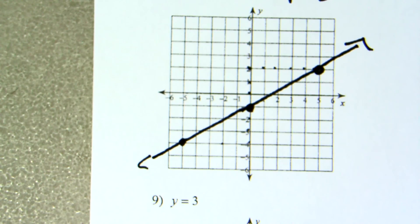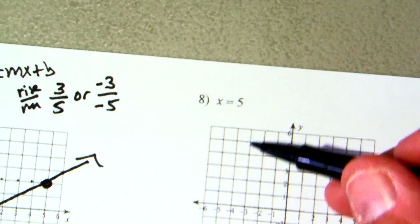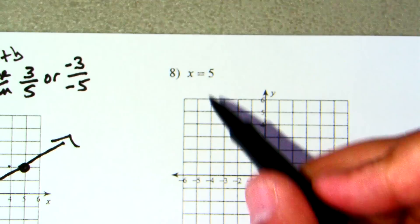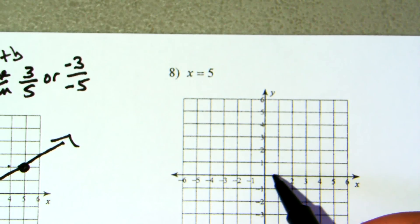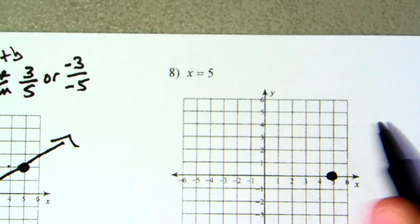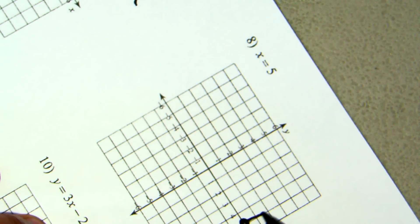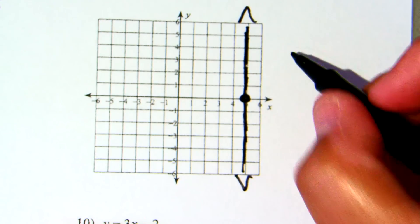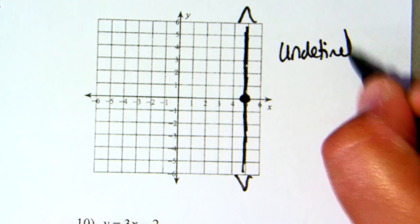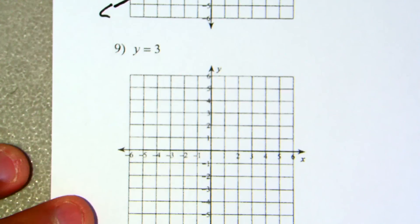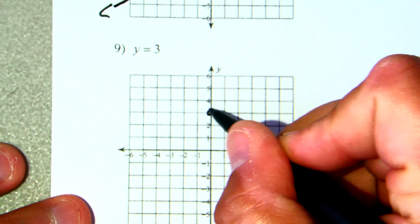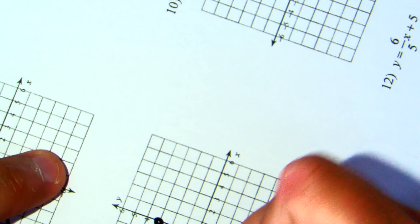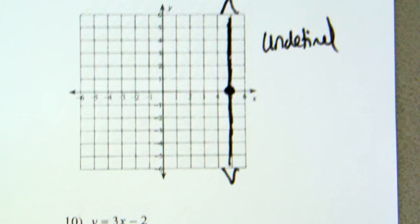Connect those three points and you have a positive slope line. For x equals 5, go right five places and draw a line straight up and down — that's a vertical line, so the slope is undefined. For y equals 3, go up three places and draw a horizontal line — that slope is zero. So: zero slope is a horizontal line, undefined slope is a vertical line.